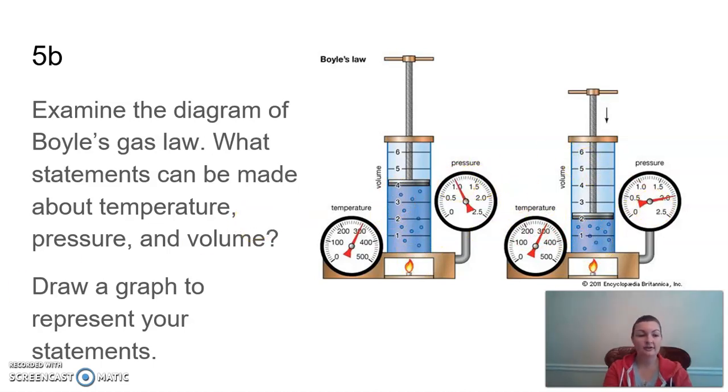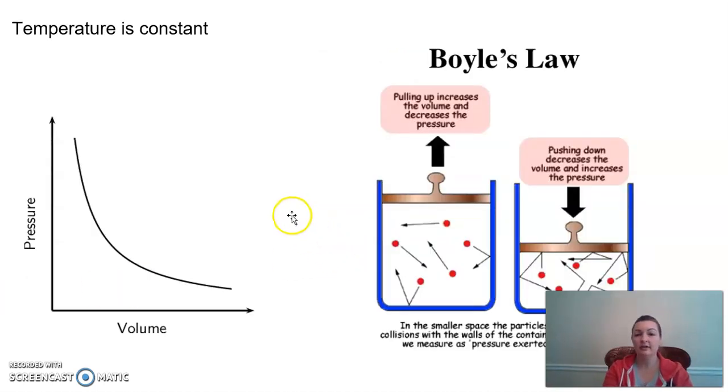So I'm going to show you one more example of Boyle's Law right here. This is kind of the same thing, but it's in a different model. It's good to look at different models to be able to understand them. This one, we have like a lid on our container. You can see that it's saying pulling up increases the volume and decreases the pressure. And this one, pushing down, decreases the volume and increases the pressure.